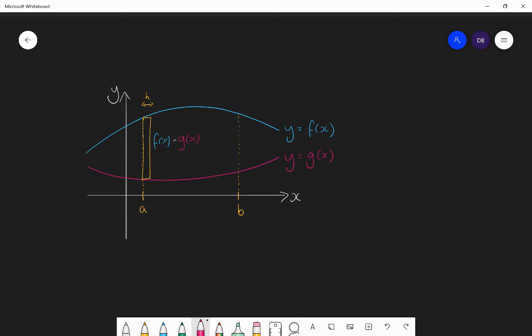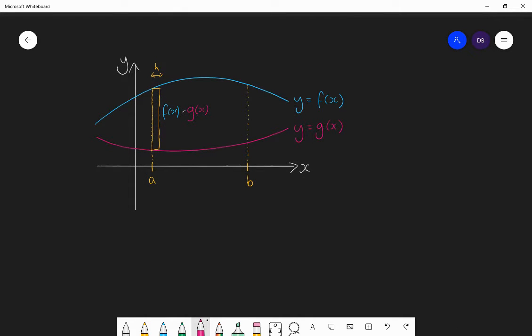So the integral that we want is as follows. Integrate between a and b is our limits of the function f of x minus g of x. So we evaluate f of x minus g of x. We find the expression of f of x minus g of x. And then we integrate that between a and b with respect to x. And that is how to find the area between two functions.